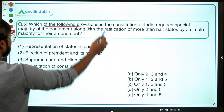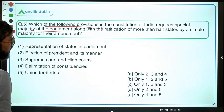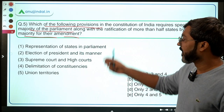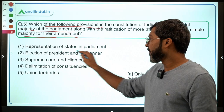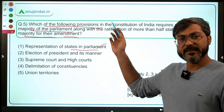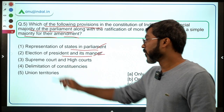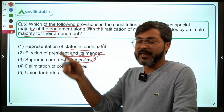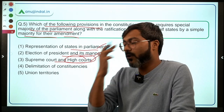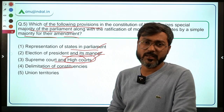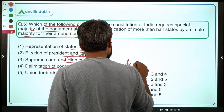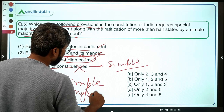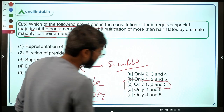Question number five: which of the following provisions require special majority of parliament along with ratification of more than half the states by simple majority for their amendment? Representation of states in parliament — yes, it is a federal provision requiring this type of majority. Election of president and its manner — yes, we just discussed this. Supreme Court and high courts — yes, the entire judiciary is part of federal provisions. Delimitation of constituencies — no, it requires only simple majority. Union territories — no ratification needed, simple majority suffices. So the correct answer is option C: only one, two, and three.